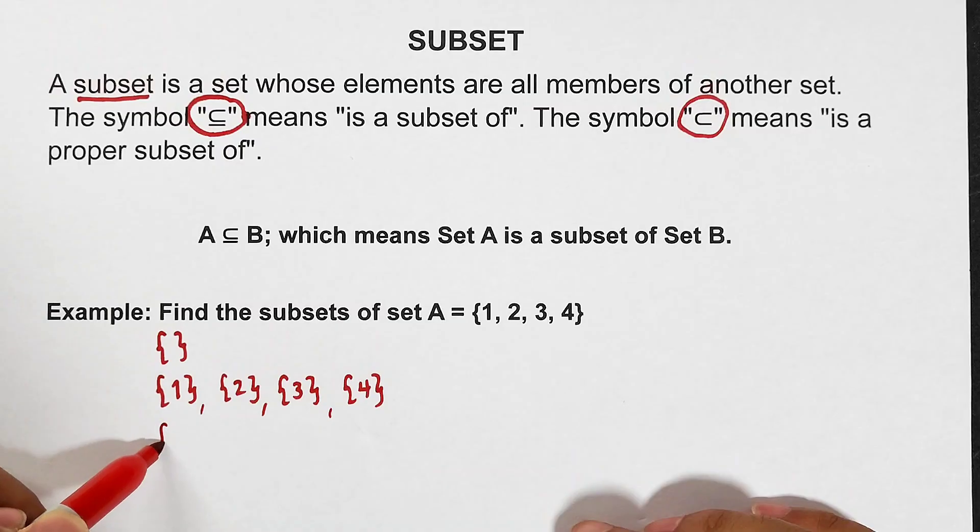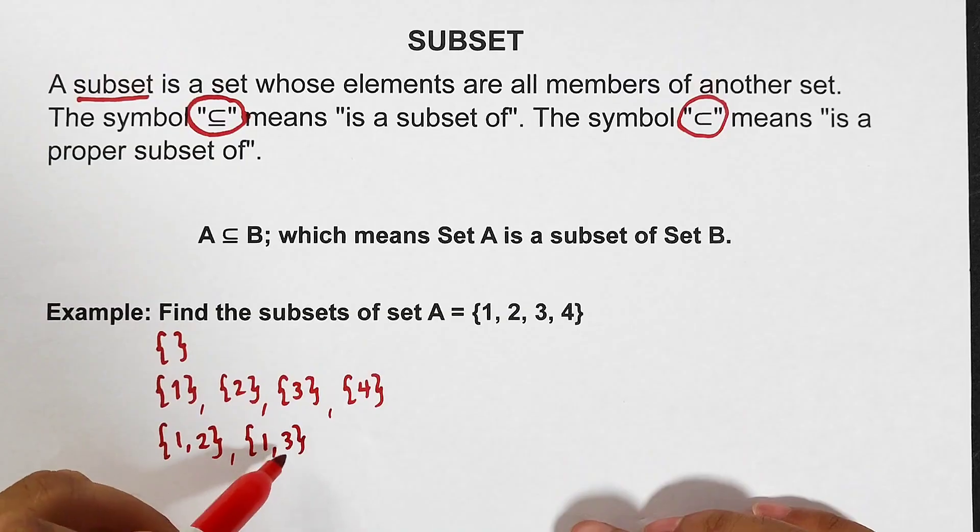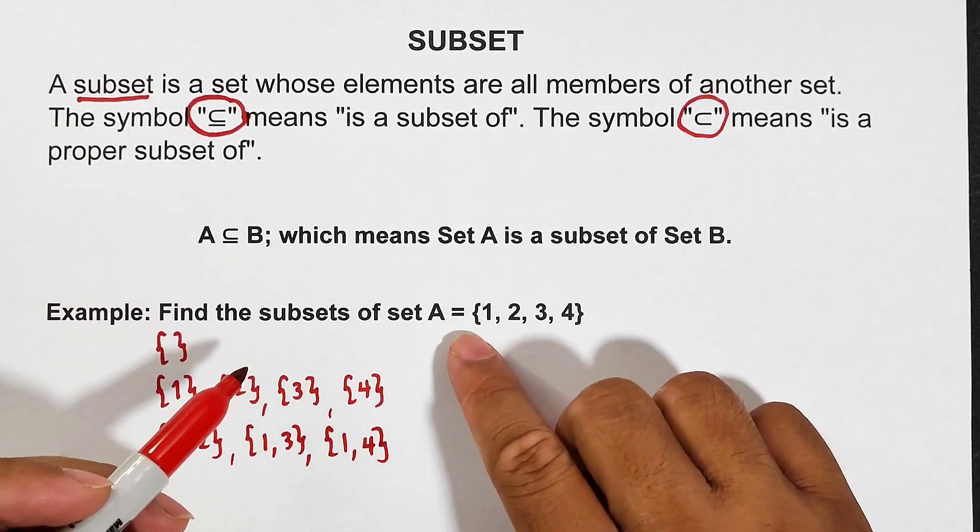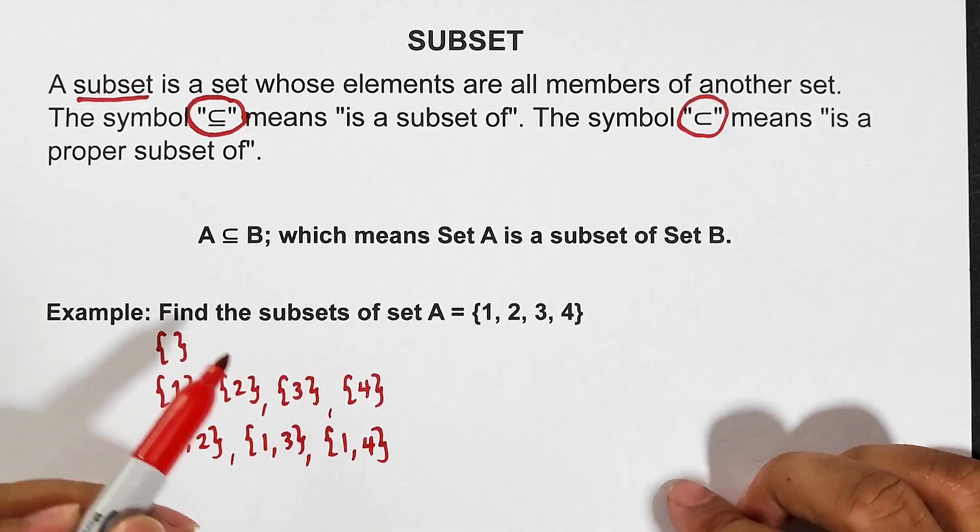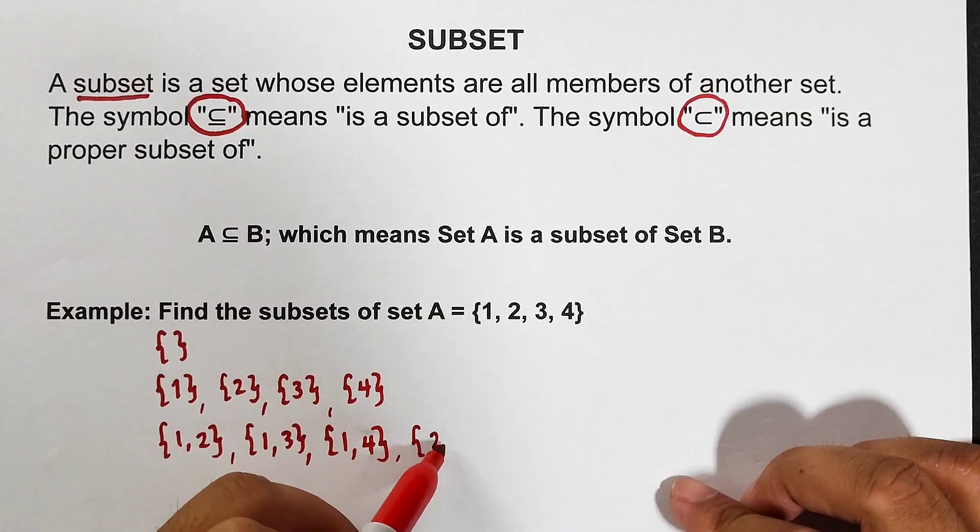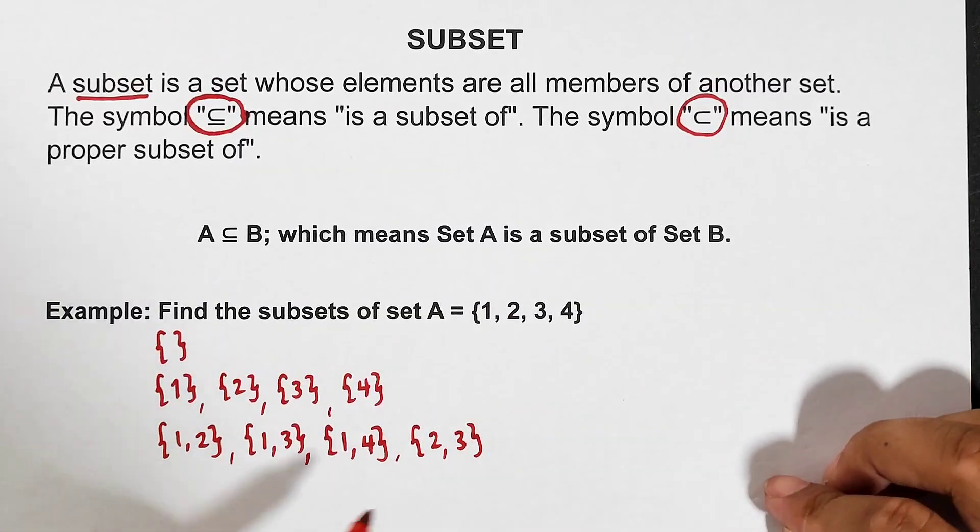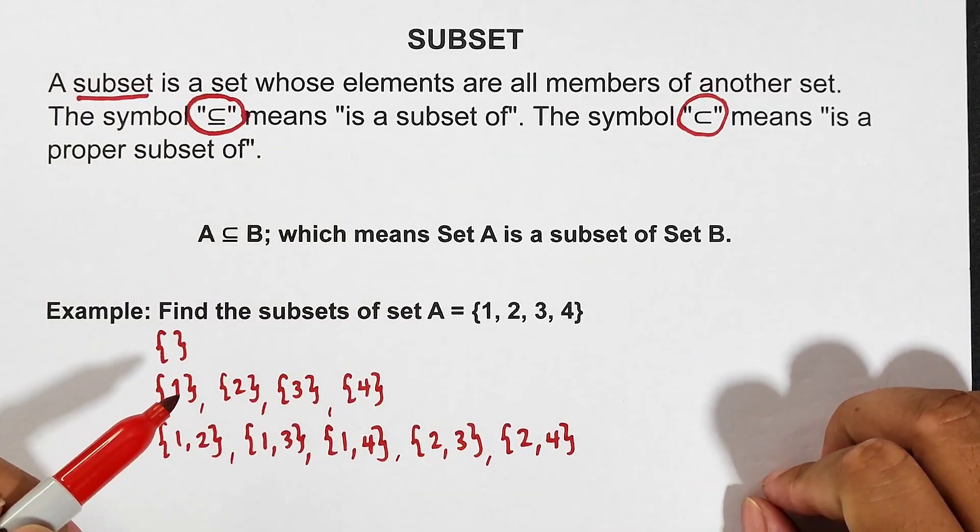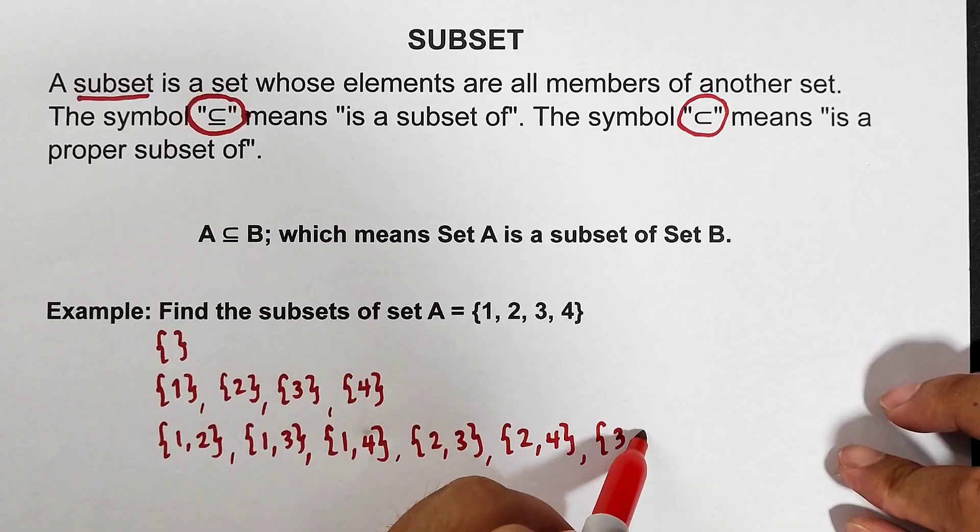Next are the ones with two elements. Let's start with one comma two, followed by one comma three, next one comma four. So we are done with one: one-two, one-three, one-four. Next combination with two: two comma three. Next two comma four. It can't be two comma one because two comma one is the same as one comma two. Next we combine three: that is three comma four.